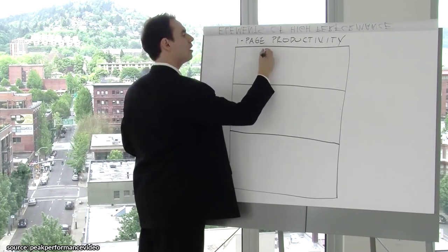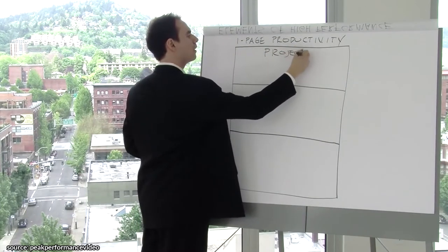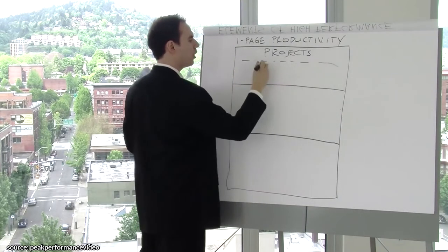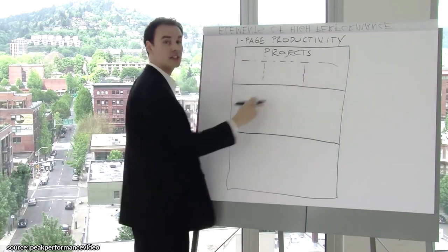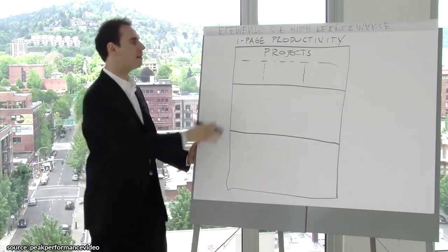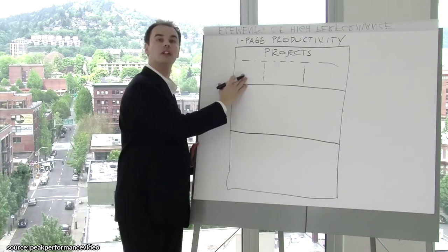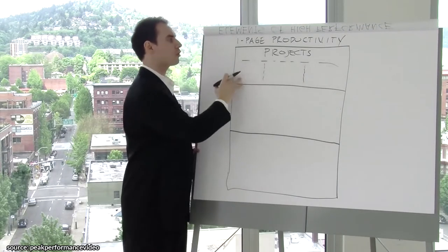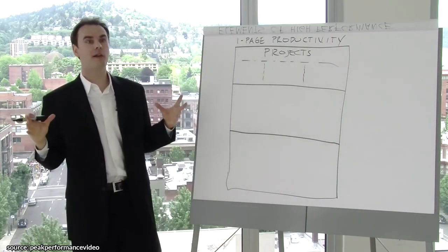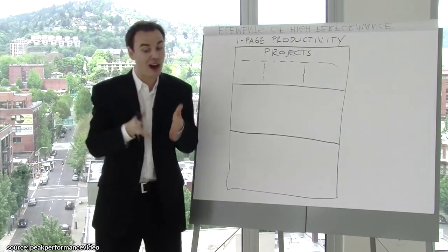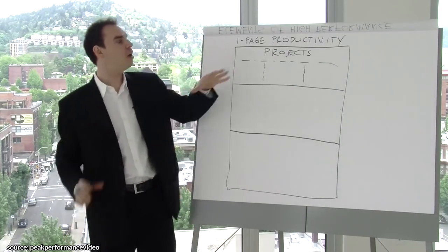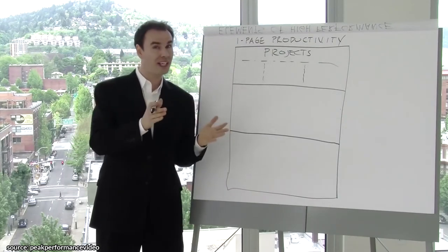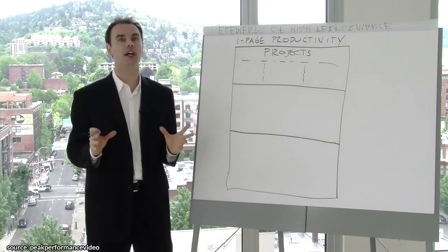The first element is major projects. Any given person probably has three big buckets of projects that they're working on. I might be working on writing a new book, doing a new seminar, reinvigorating my online marketing. These are big bucket projects that aren't necessarily the priorities for the day—these are the big vision, the big things I'm doing.